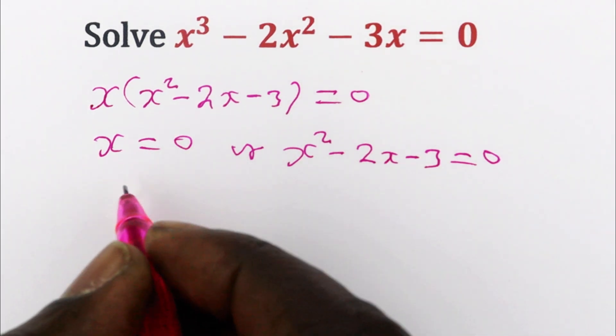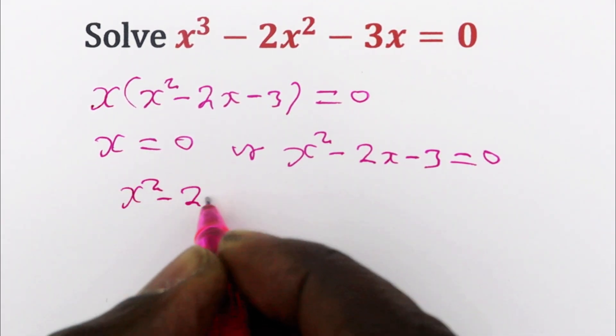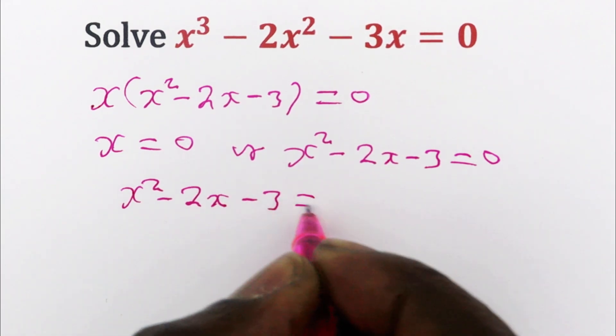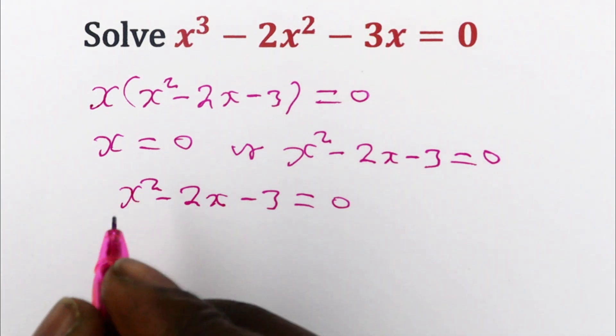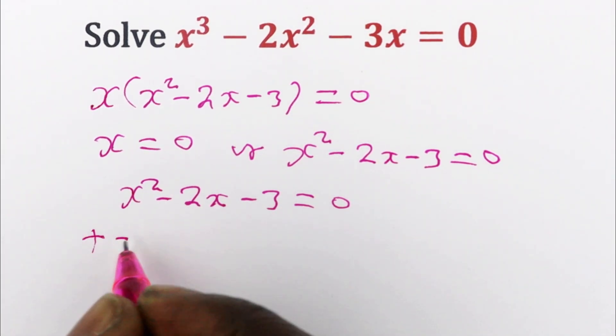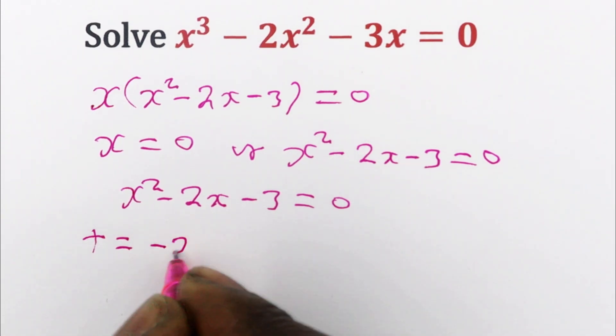So we look at this as x squared minus 2x minus 3 is equal to 0. So let us use one of the methods to solve this. We can use factorization method, and if that is the case, we need two numbers whose sum is the same as b, and b in this case is minus 2.